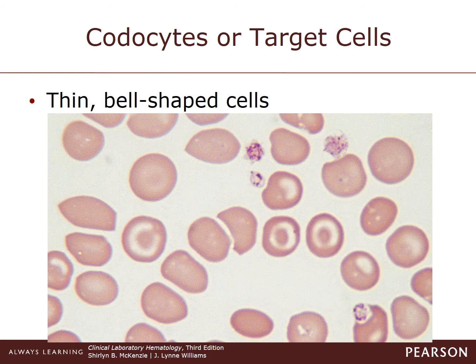Codocytes, or target cells, are thin bell-shaped cells with an increased surface-to-volume ratio. On the stained smear, they appear to have a bullseye in the center. An achromatic zone with a thin outer layer of pink-staining hemoglobin surrounds the bullseye. This can be due to an artifact during smear preparation or due to hemoglobin abnormalities.